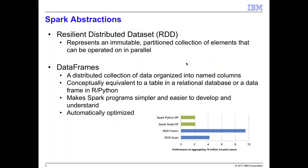A quick review on Spark abstractions. The original abstraction when Spark was first introduced was the concept of Resilient Distributed Datasets, or RDDs. An RDD is a distributed collection of objects all of the same type that can be operated on in parallel. They're immutable, but you can transform RDDs into new RDDs to create a pipeline. Later, when Spark SQL was introduced, an abstraction called DataFrames became available, which takes the RDD concept and organizes data into named columns.